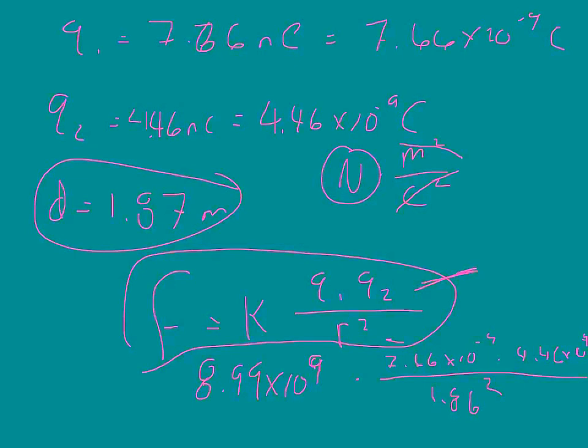Now just a quick look at the math. We've got a 10 to the 9th, a 10 to the negative 9th, and a 10 to the negative 9th. And so whenever you multiply 10 to the 9th by 10 to the negative 9th times 10 to the negative 9th, you end up with an answer that's in 10 to the negative 9th. We're going to divide it by 1.86 squared, so it should probably be an answer that's in 10 to the negative 9th, or 10 to the negative 8th.